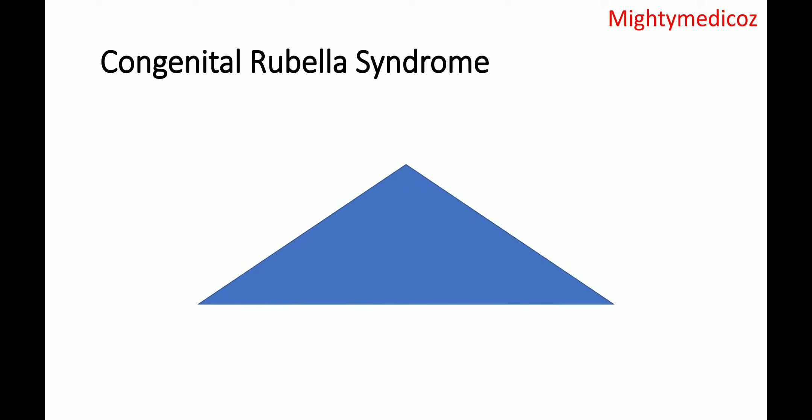Welcome to MIT Medicals. Today we are going to see about the triad of congenital rubella syndrome, which has three components: ear, eye, and cardiac defect.